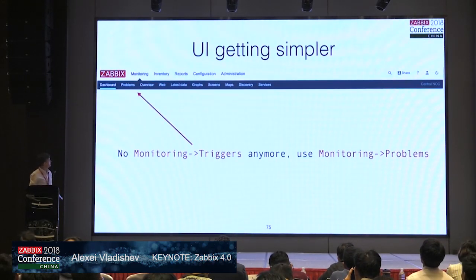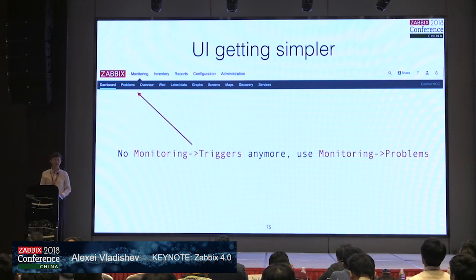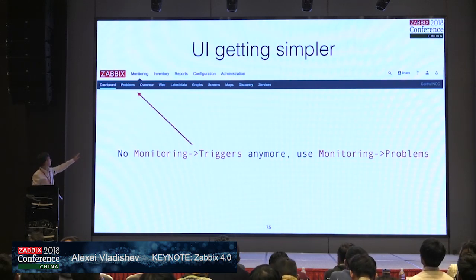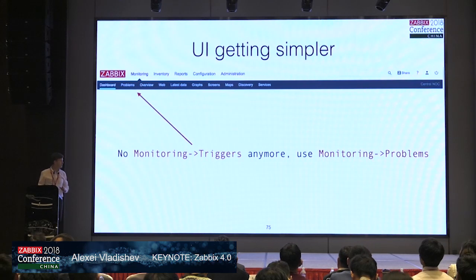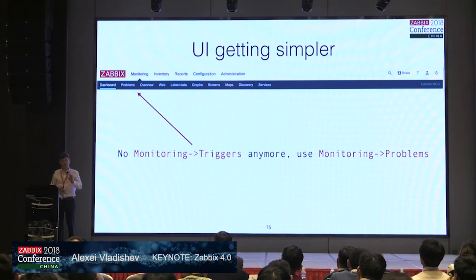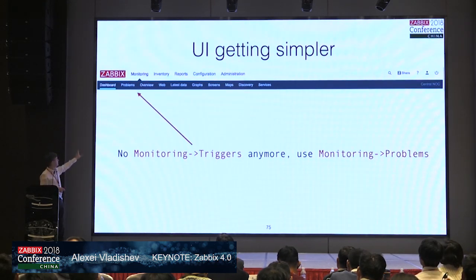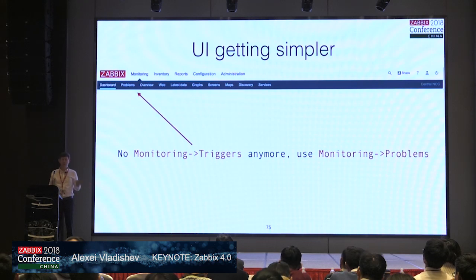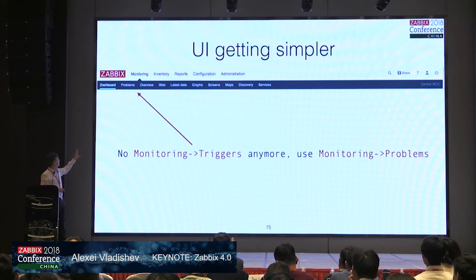The UI is getting a little bit simpler. We decided to remove monitoring triggers — there is no monitoring triggers anymore, only monitoring problems. It was a source of confusion: some people couldn't understand whether to look at problems or triggers, what is a problem and what is a trigger. So we decided that we display problems only in the monitoring section. Under configuration, triggers are still there — we still use triggers — but for operators and end users, we show only problems to avoid any confusion.